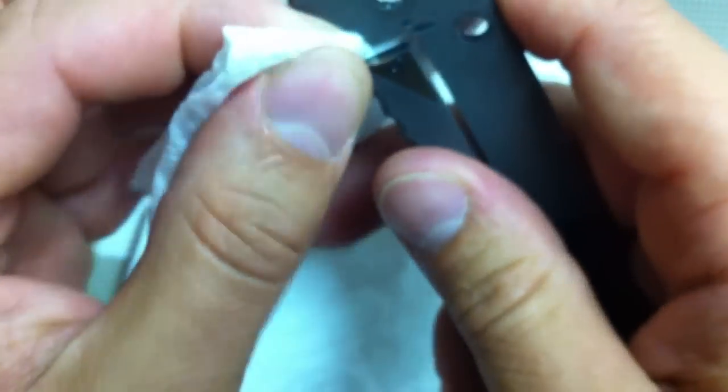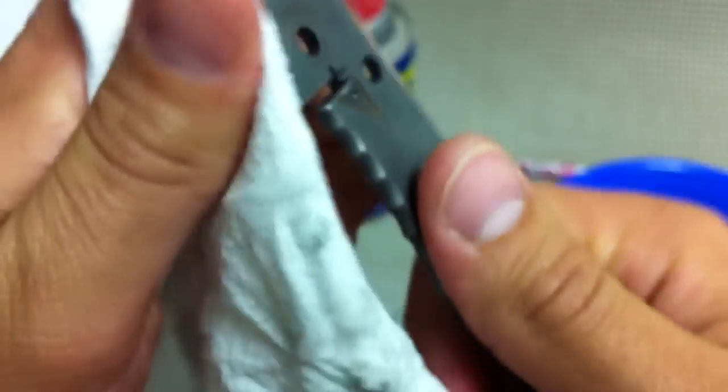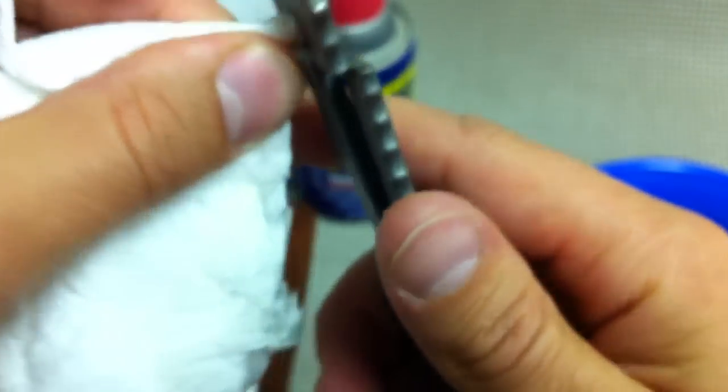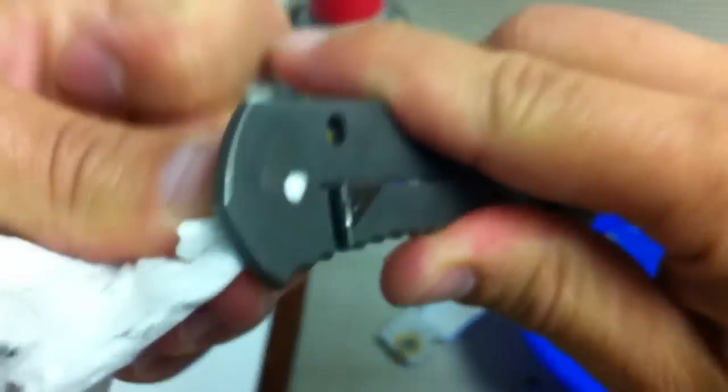Most titanium frame locks do that. That's why Spyderco does the military stainless steel inset now, because titanium is relatively soft. It's a strong material, but it's just not as hard as the blade. Especially at what, 61 Rockwell.